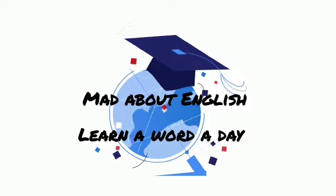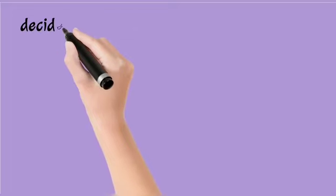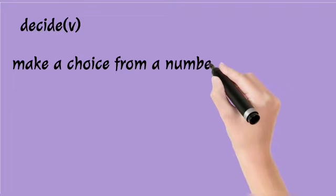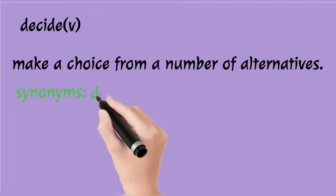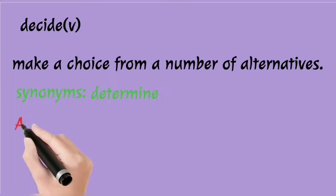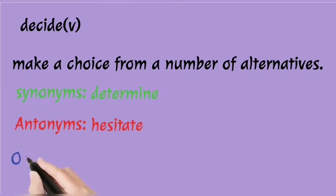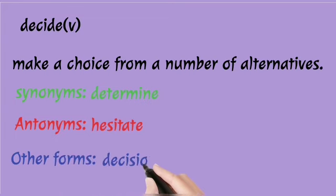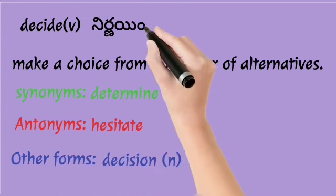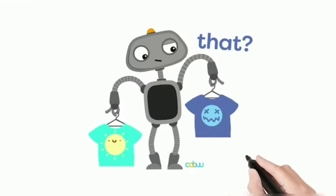Hi dear ones, welcome back to Mad About English. Today's verb is 'decide' — to make a choice from a number of alternatives. The synonym is 'determine' and the antonym is 'hesitate.' The related noun form is 'decision.' Let's see its uses in sentences.